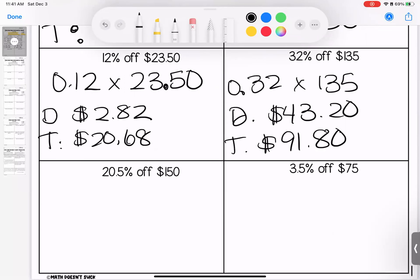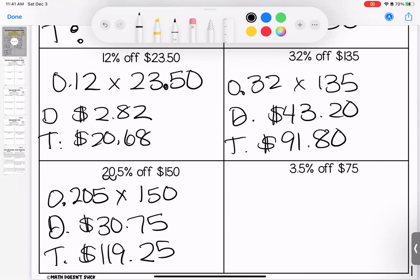And this one, be careful. When we're making a percent to a decimal, remember we move that decimal place two times. So for 20.5%, my decimal is 0.205. I'm multiplying that by $150. My discount on this one is $30.75. The total I would pay is $119.25. Same thing with this. Be careful. 3.5% is my discount. When I move that decimal two times, I have to put in my favorite number zero as a place saver, multiplying that by $75. My discount is $2.63. My total paid is $72.38.